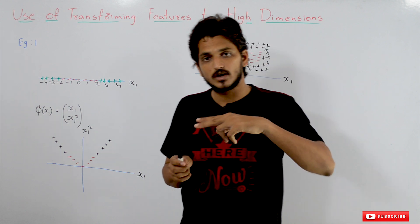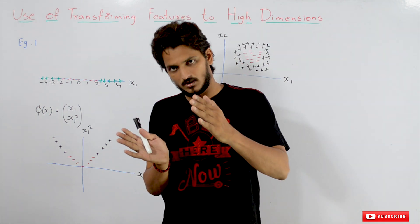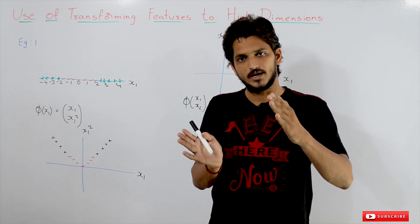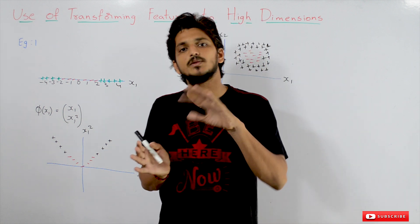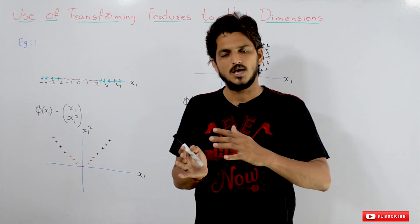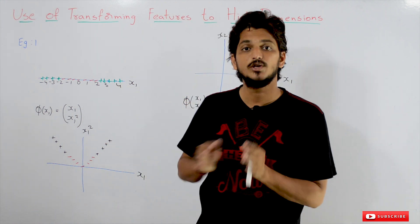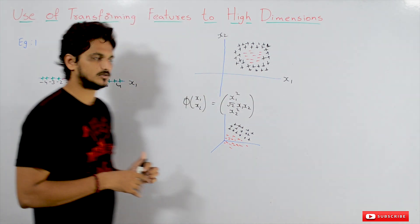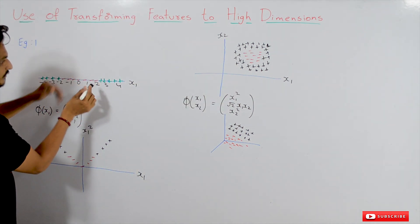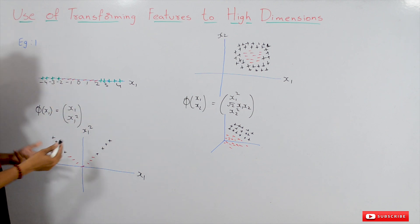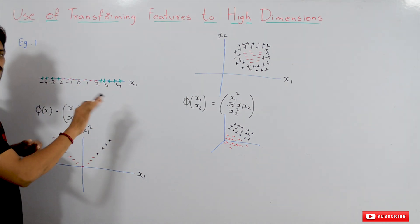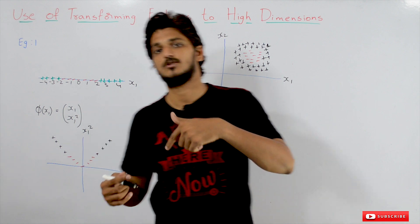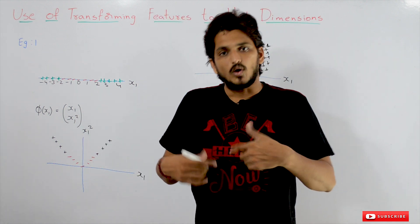In a two-dimensional coordinate system we use a line to separate positive and negative classes. In three-dimensional we use a plane, and in higher dimensions we use a hyperplane. In one-dimensional coordinate system we use a point. Can we find a point that separates the positive and negative classes? No — you pick any point on this line and we cannot separate them. This is not a linearly separable dataset on a one-dimensional coordinate system.